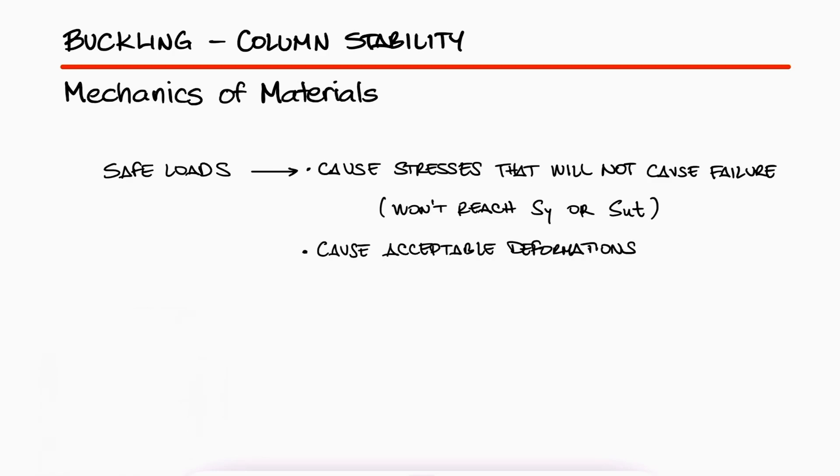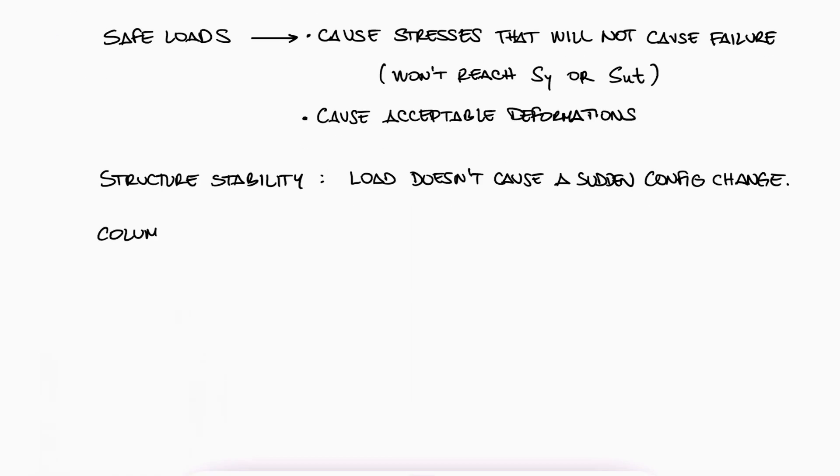The stability of a structure refers to its ability to withstand a load without undergoing a sudden change in configuration. Specifically for columns, a compressive force can be so high that the column is no longer only subjected to compression, but to a bending moment that causes it to bend.